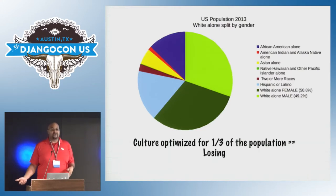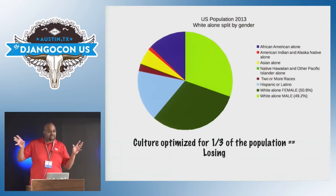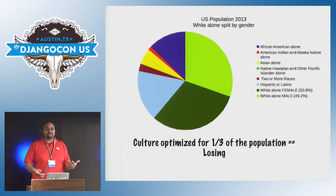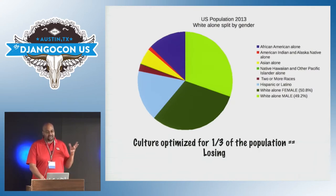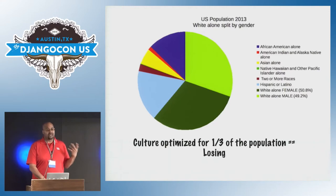This is just U.S. data. I know Django is a global project, but there's only so much data I can get from around the world, and definitions of ethnicity vary from country to country. But the idea is that the culture is optimized to benefit a relatively small pool, and that's a problem as far as finding the largest number of high-quality contributors.